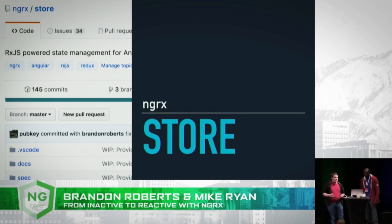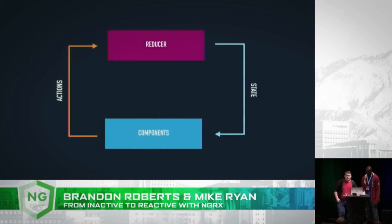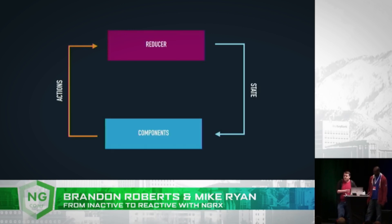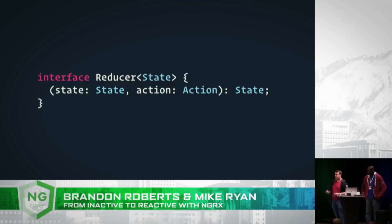NGRX store is an RxJS-powered state management container for Angular apps, heavily inspired by Redux. When the user interacts with components, we take those events and model them in a consistent way using actions. We'll write a reducer function that takes those actions and reduces them into state. This reducer is a special function — it takes in the previous state and an action that we dispatch and returns the new state.